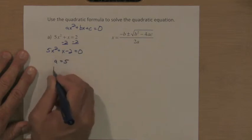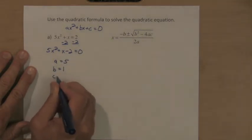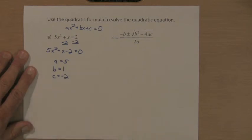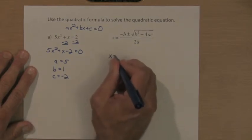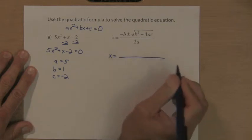So my value of a is 5, my value of b is 1, my value of c is negative 2. So I go to the quadratic formula given to you right here, and put in the numbers.